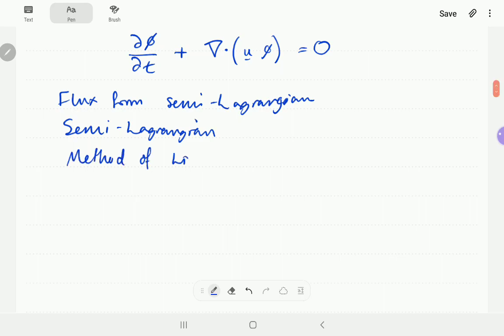There are so many different types of advection scheme and different categories, so this doesn't cover a lot of things, for example. Some of these could be bounded or not bounded or implicit or explicit.